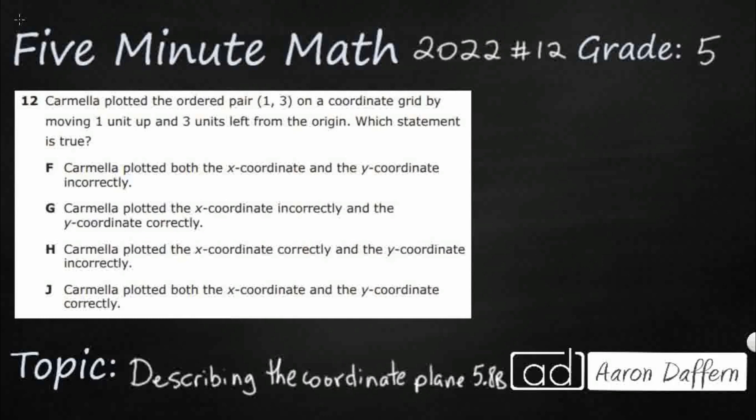If you haven't done so already, please go ahead and take a moment to pause the video, work this problem out on your own, unpause it, and we will look at our answers together. So we have Carmela. Carmela is plotting an ordered pair of (1, 3) on a coordinate grid.